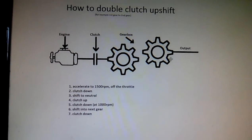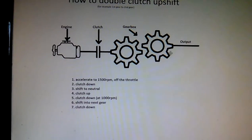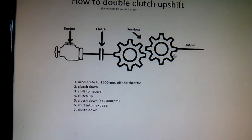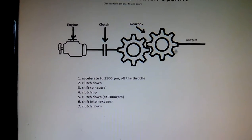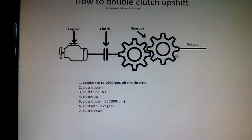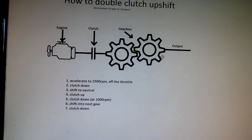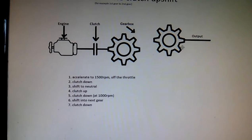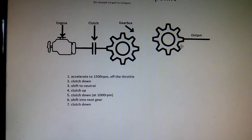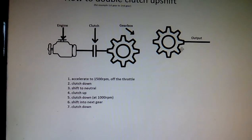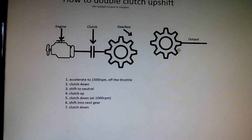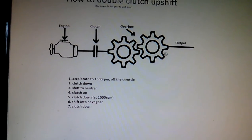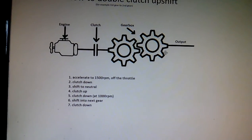The input and the output must go at the same speed to shift into a gear. So you're in first gear, you accelerate to 1500rpm, clutch down, shift to neutral, clutch up, push your clutch down at 1000rpm, shift into the next gear, clutch down — you're done.